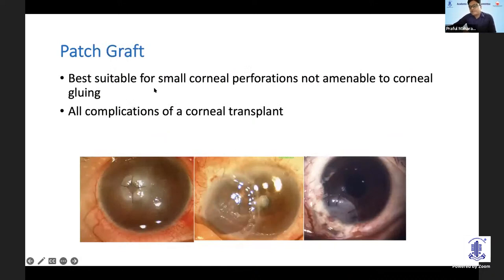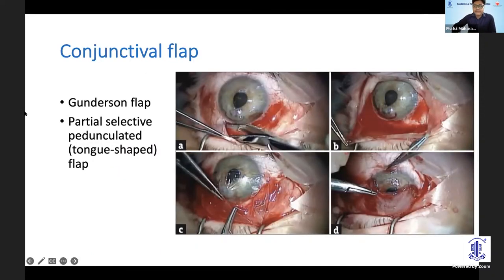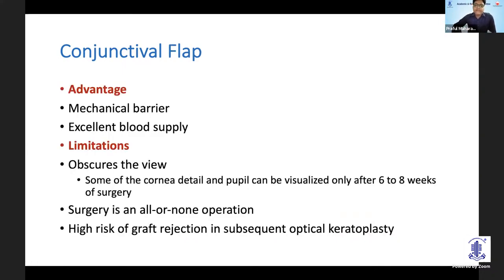Patch graft: if the size of perforation is large, you have to do a patch graft, and in that case all the complications of cornea transplant will apply. Conjunctival flap — I am not a fan of this technique. This is a picture from Sun et al., a recently published paper, where they use a partial selective pedunculated flap where the conjunctival graft is mobilized and advanced to the site of perforation after putting a layer of AMG. Conjunctival flap has severe problems: it completely obscures the view, you cannot see what is going on behind it, and it's an all-or-none approach — since you have advanced the conjunctiva, you don't have a second chance to correct it if anything goes wrong.